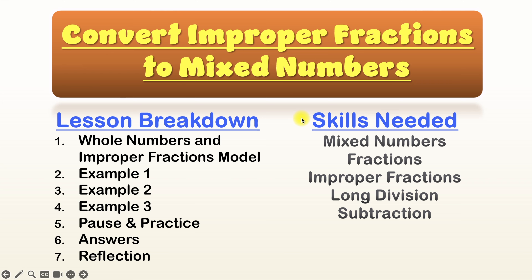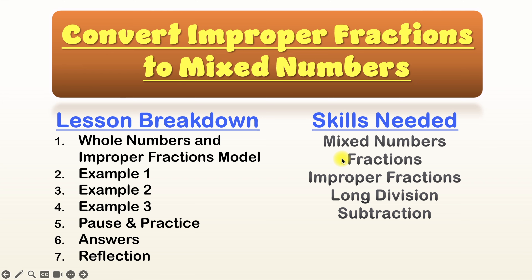But in order to do well, you need to make sure you have the following skills. First, you should have a general understanding of what mixed numbers are — that they have a whole number and a fraction next to them. You should know about fractions, specifically that the top is called the numerator and the bottom is called the denominator. You should also know about improper fractions and why they're called improper, as well as long division and subtraction. So make sure you know those and let's get started.